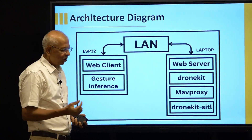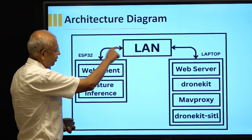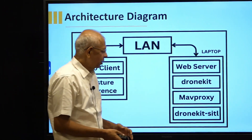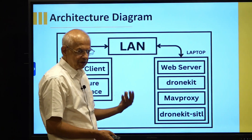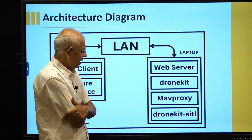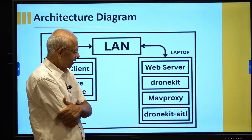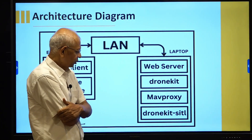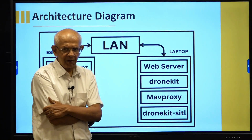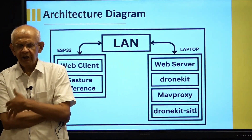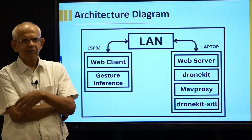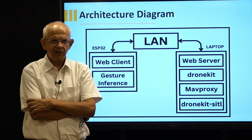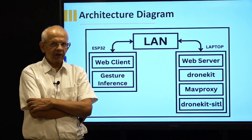The ESP32 is that small wearable device. We are going to go through a Wi-Fi LAN to a laptop, where a web server is going to run, which has the WebSocket server. It is then going to use a DroneKit API via MAVProxy to talk to the DroneKit simulator. We are going to see the drone simulated to go up, down, left, right — whatever the gesture which we have been able to recognize.